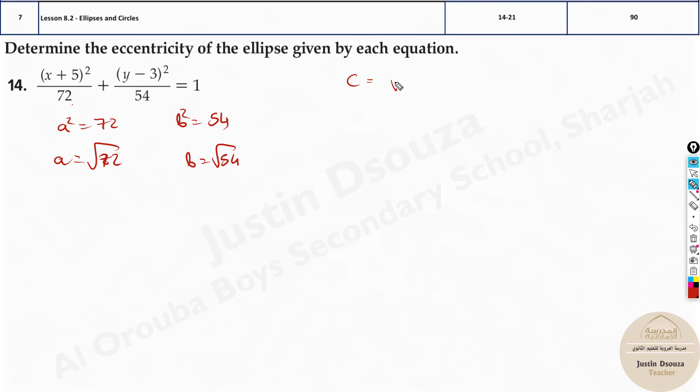What about c? Square root of a squared minus b squared. This is another important thing, minus b squared. Now when you're substituting, don't substitute root 72 the whole square. You know a squared value is 72, do it directly. And 54, here you go.